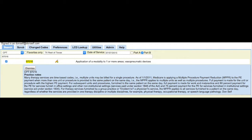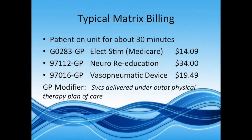Here's an example of typical Matrix billing for 30 minutes. You might have one charge of G0283 — the Medicare electrical stimulation code — with a typical Medicare allowed amount in Houston, Texas of $14.09 for that code. Then probably one charge for neuro-reeducation, 97112, for $34, which pays better than some other codes. And then one charge of 97016 for vaso-pneumatic device. You want to make sure you use a GP modifier on these for Medicare, and some commercial carriers are now requiring the GP modifier as well — it doesn't hurt to put it on for commercial carriers. The GP modifier indicates that the patient is under a physical therapy plan of care.